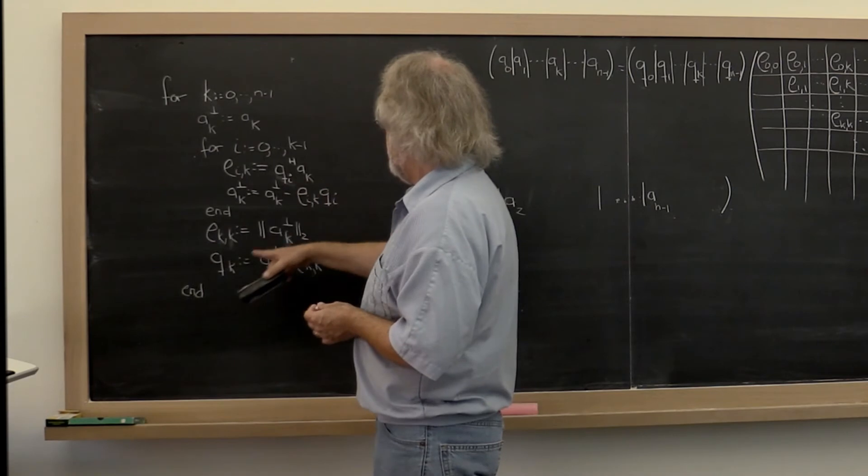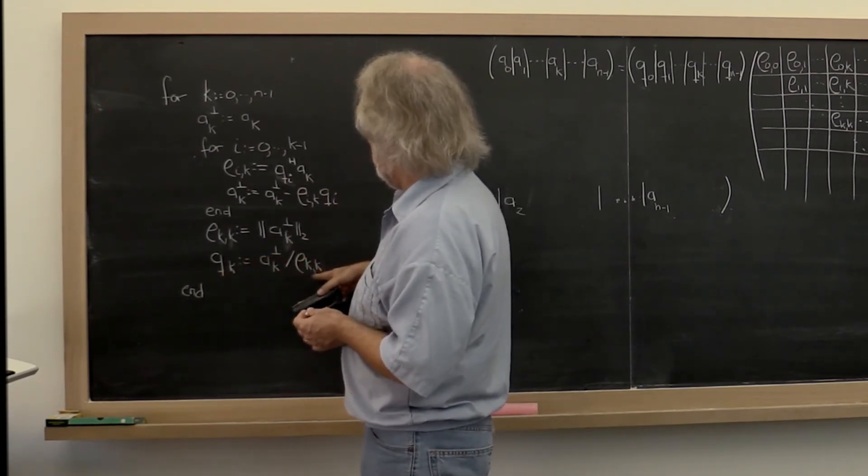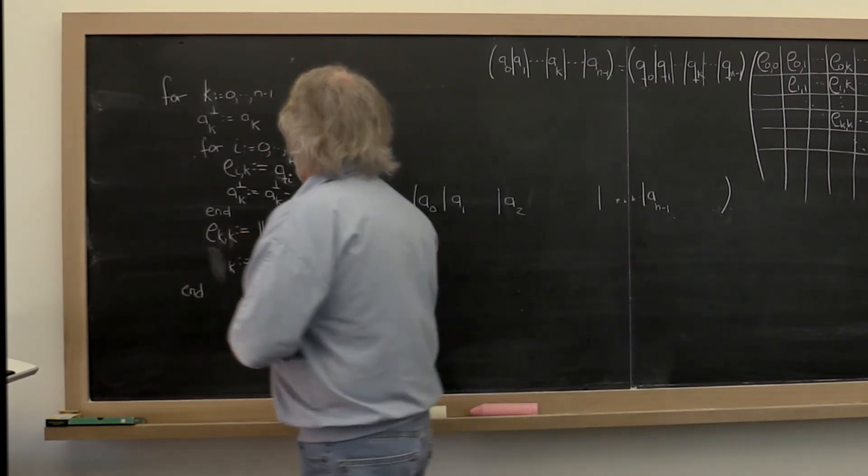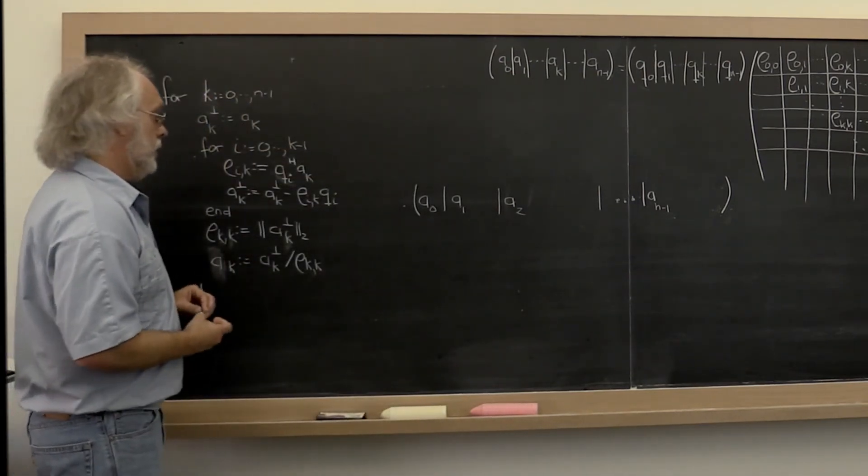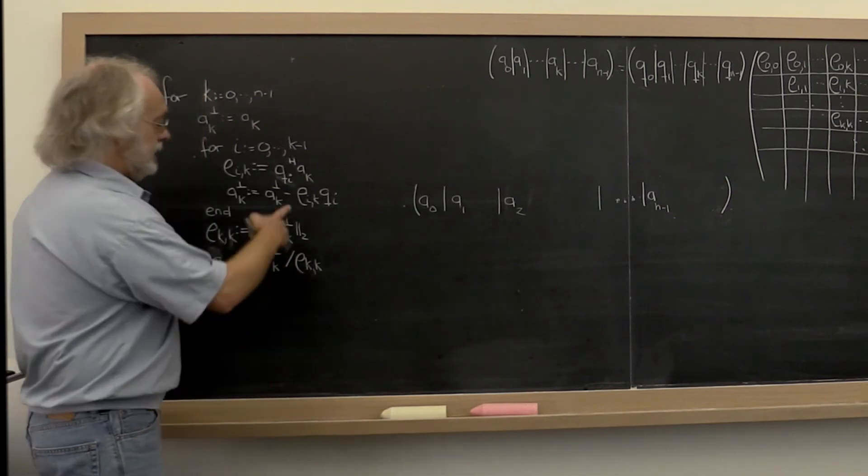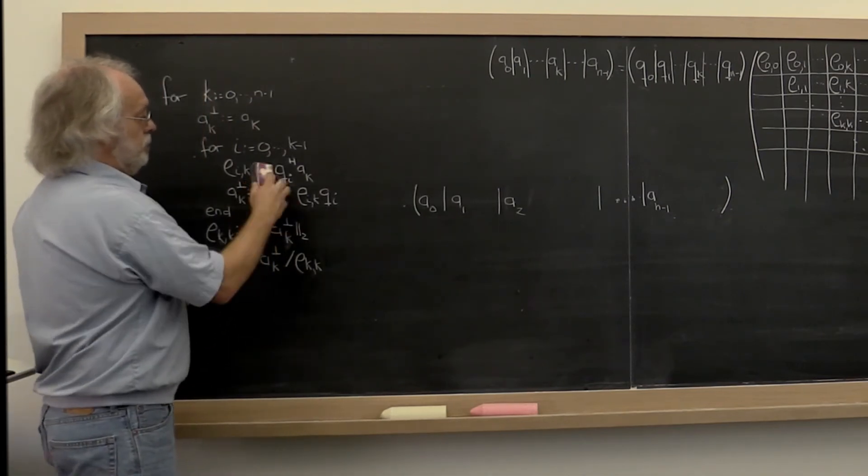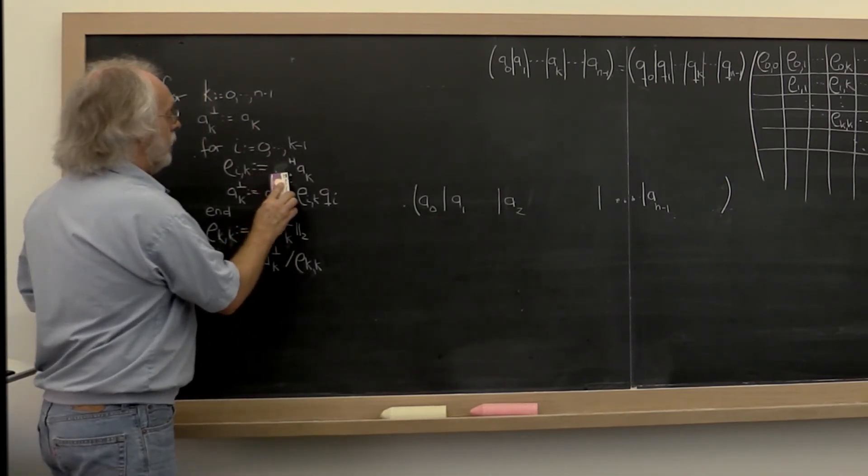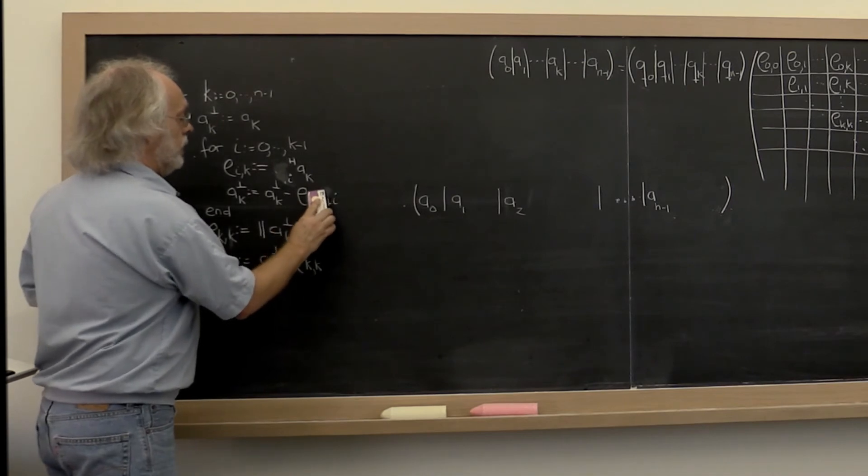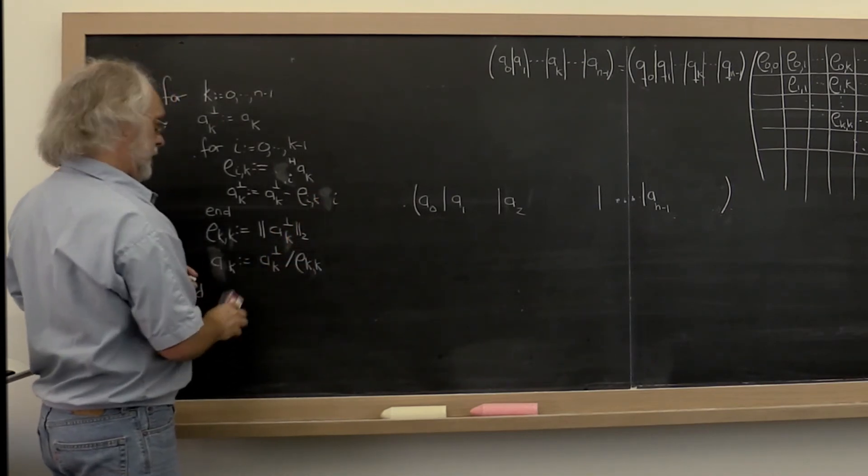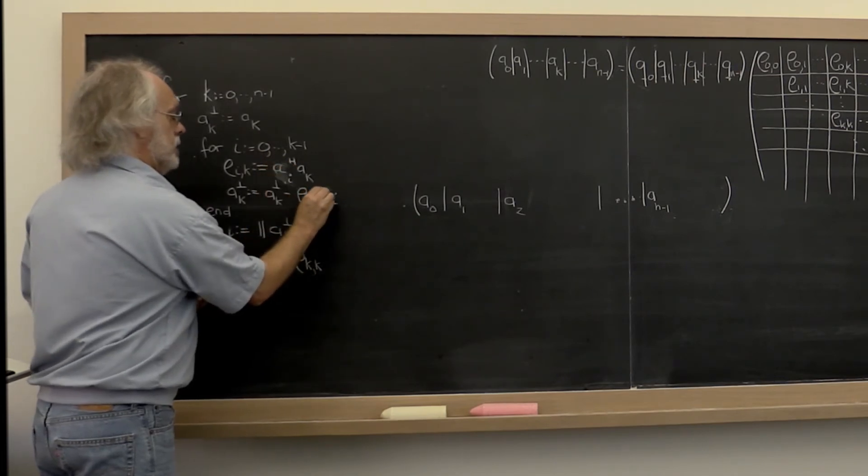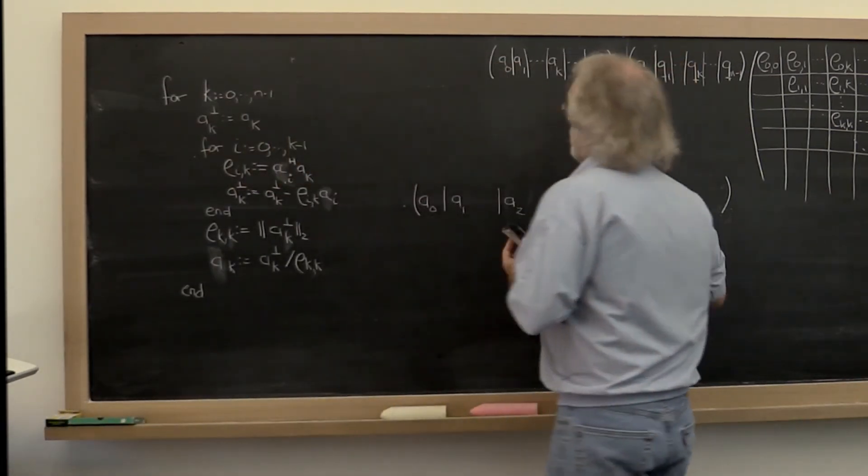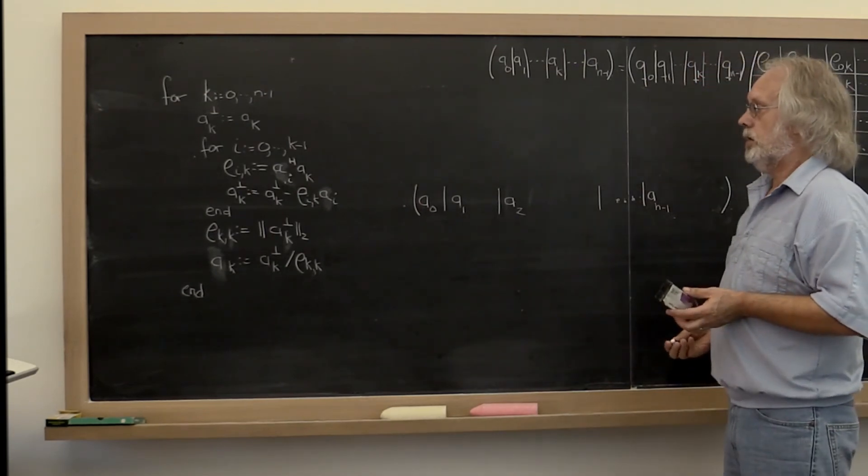What would happen is that when we're all done at the bottom here, we would simply set Ak to what becomes qk. But it also means that all along, instead of computing with q sub i, we should compute with A sub i. And now we don't need to have an extra array in which to store q.